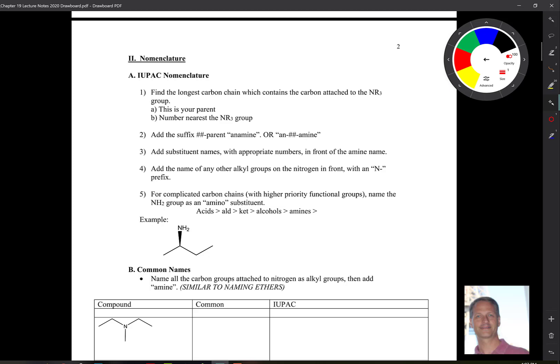Well, the nomenclature turns out to be fairly straightforward because it's based off of those same rules that we learned way back in chapter number three. So we find the longest carbon chain which contains the carbon attached to the nitrogen. So the NR3 where the R could be alkyl groups or it could be hydrogens. That's your parent, number nearest that amine group. And then we add the suffix, number number, parent, an amine, or an number number amine. Of course, if it was an alkene, then it would be an N, so on and so forth. The rest is simple. We add substituent names.